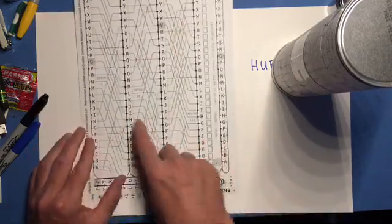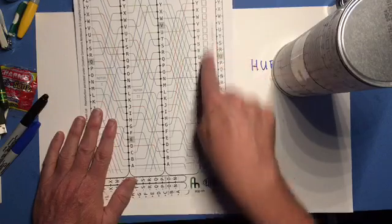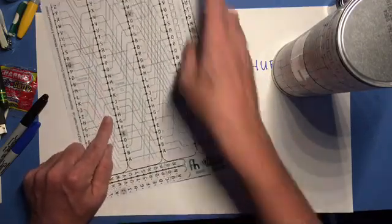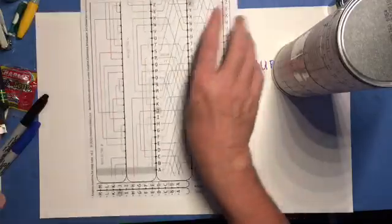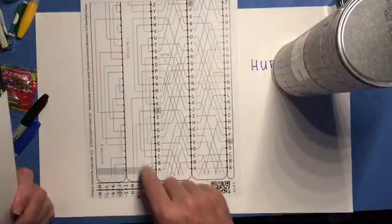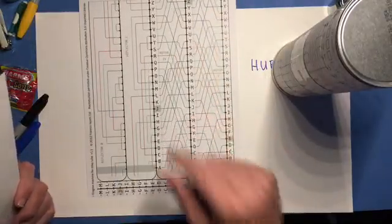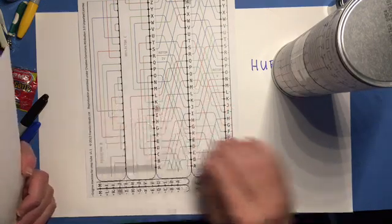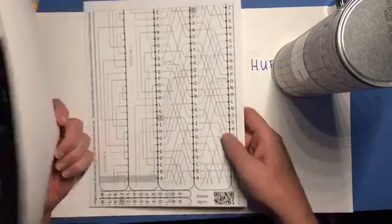We're just going to cut out these. And here you have your input-output. You have your rotors 1, 2, 3. On page 2, you have your reflectors B or C, and rotors 4 and 5. And you can use any combination of rotors and either reflector, and it's going to work the same way just like the real Enigma machine.